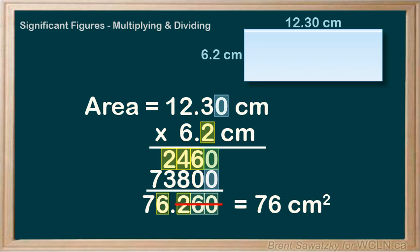A rule we can follow is, we look at all of our measurements, and the one with the least number of sig figs controls our result. Our result will have the same number of sig figs as the measurement with the least number of sig figs.